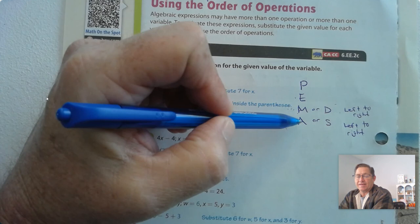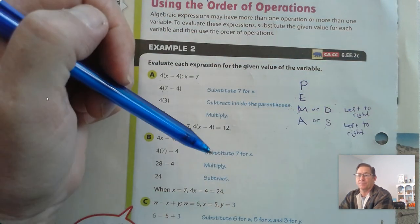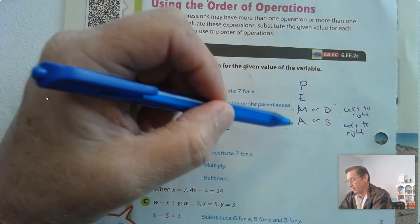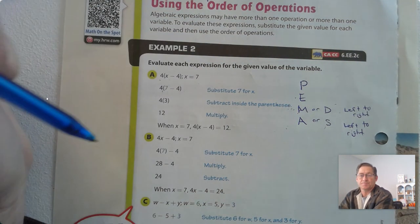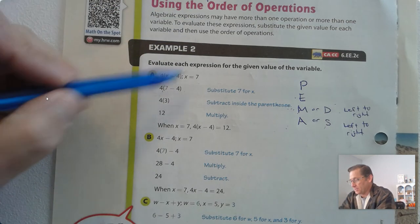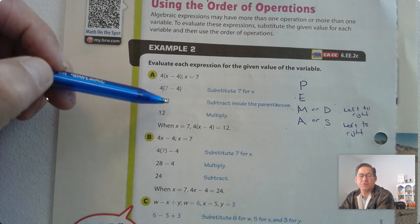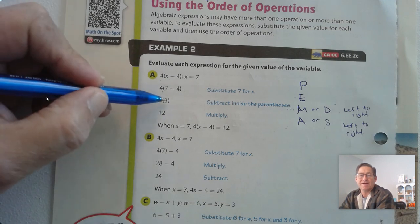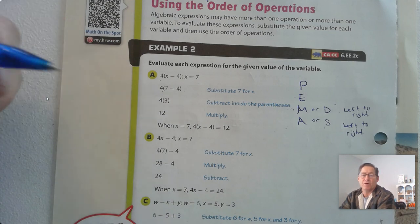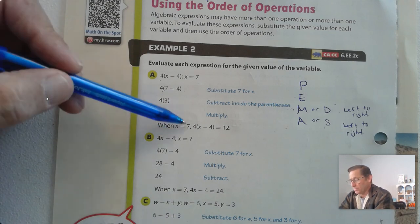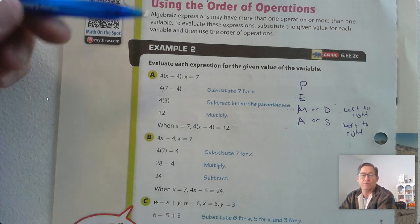Then we end with addition or subtraction, left to right. So we substitute 7 for x. Parentheses come first, so 7 take away 4 is 3. That leaves us 4 times 3, which is inside the parentheses. So 4 times 3 is 12. When x equals 7, 4 times the difference of x and 4 is 12.